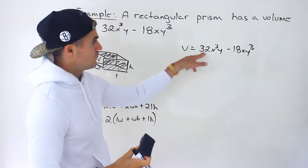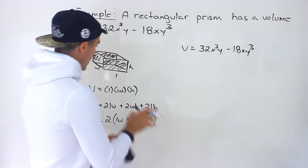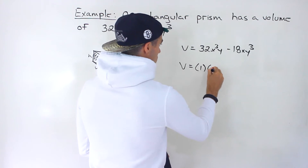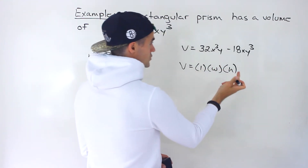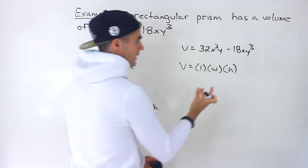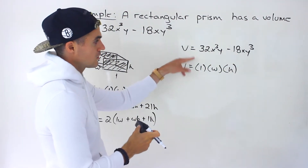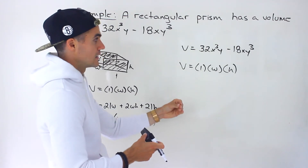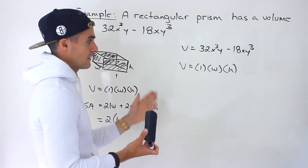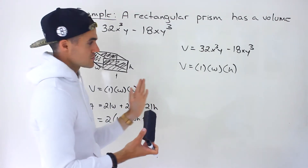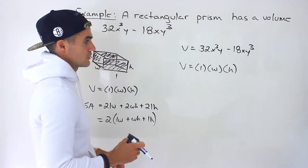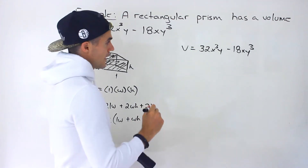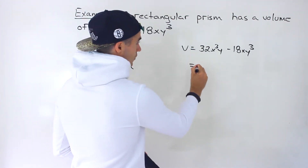This volume expression is not in the format of length times width times height — that format involves multiplying three expressions, whereas here we are subtracting. So we can't tell what the length, width, and height are directly. We have to change this into a product by factoring it. Once factored, we'll have expressions multiplying each other and can identify the length, width, and height.